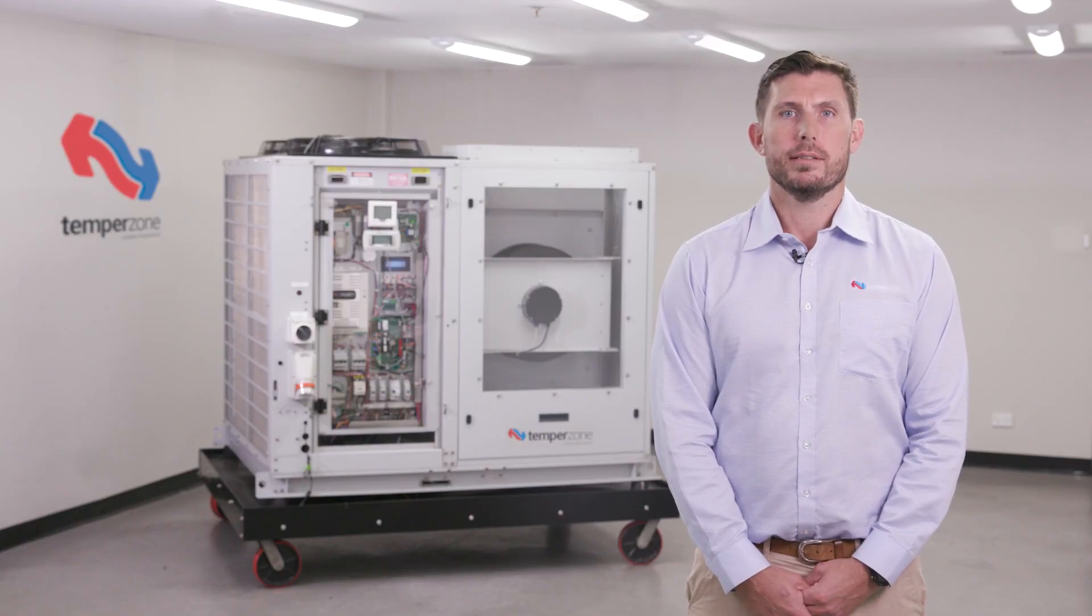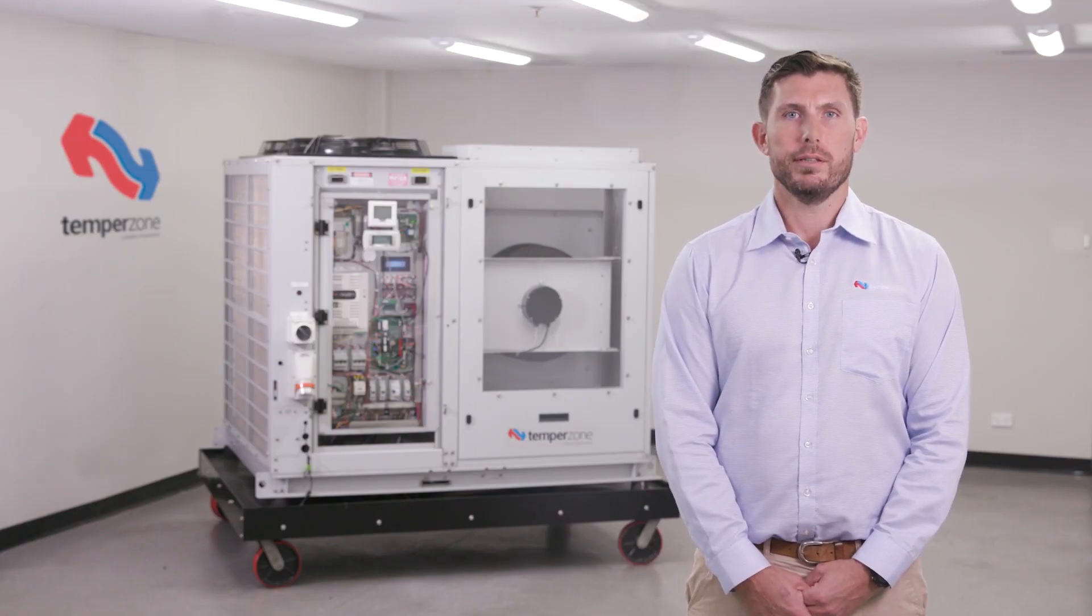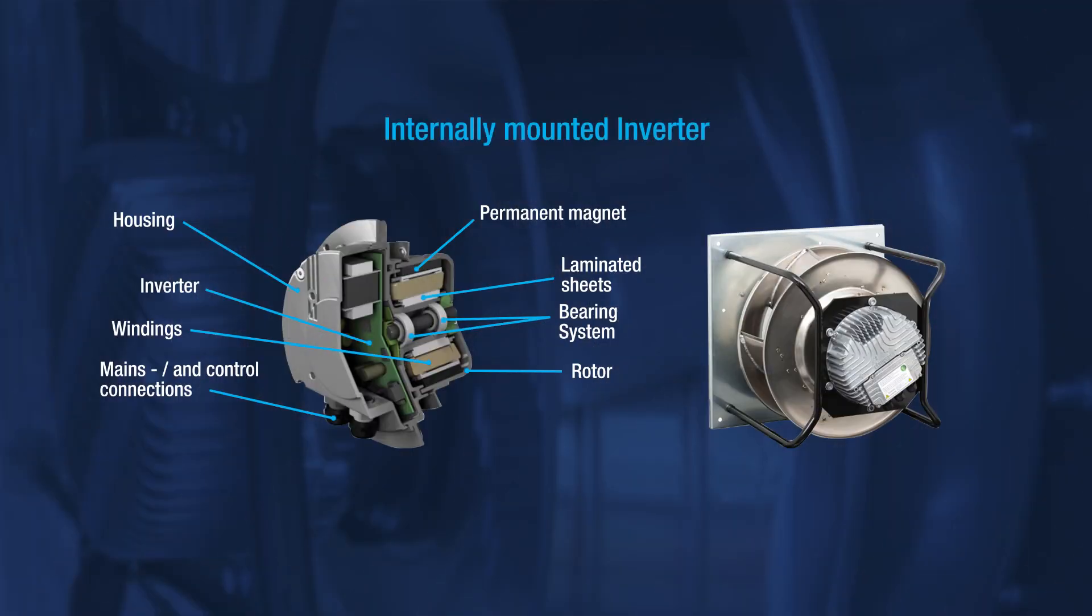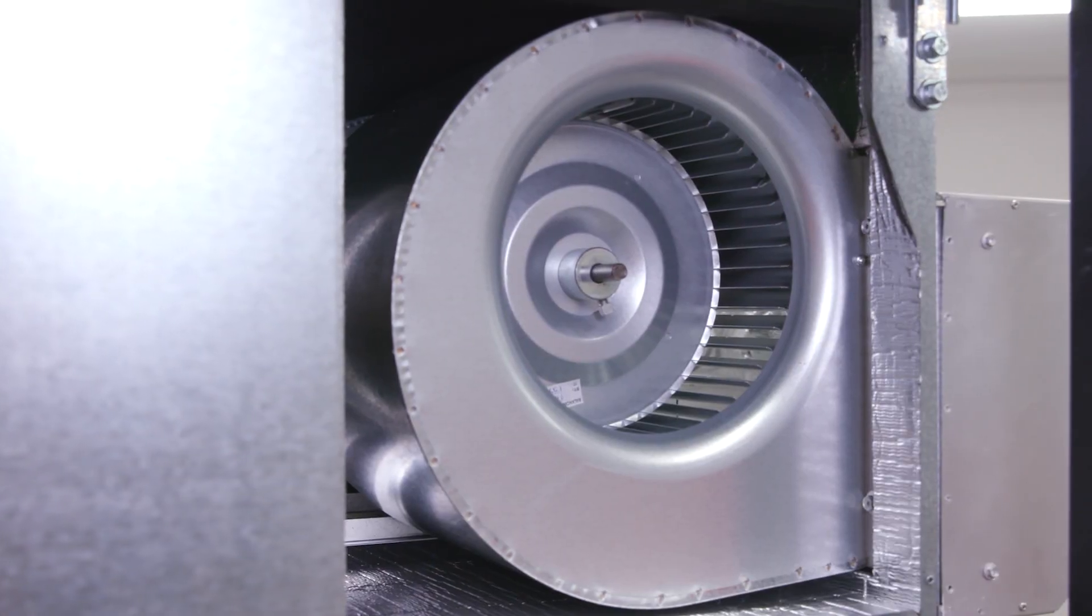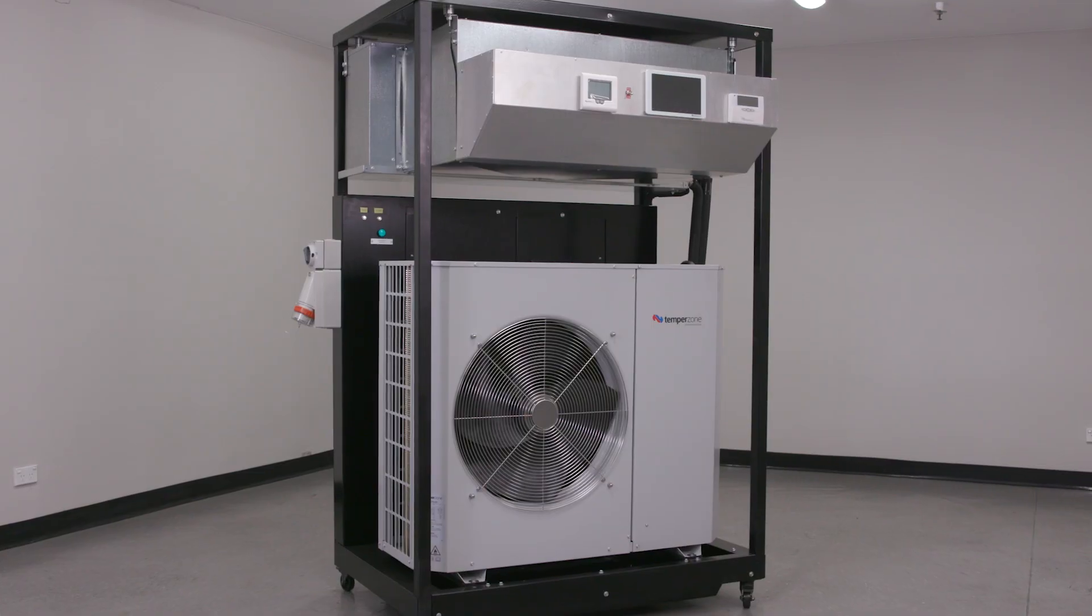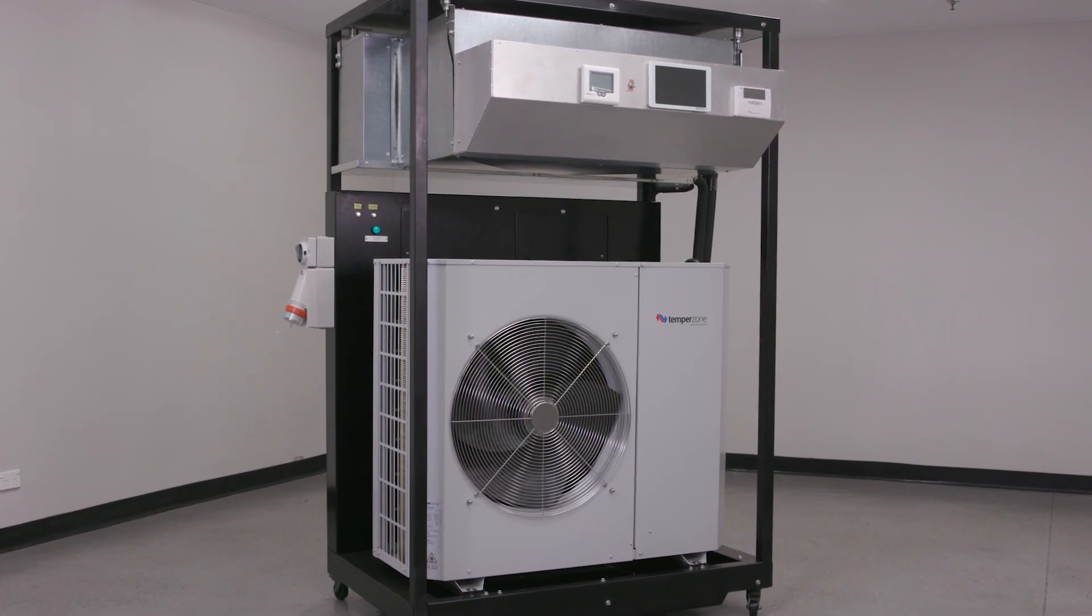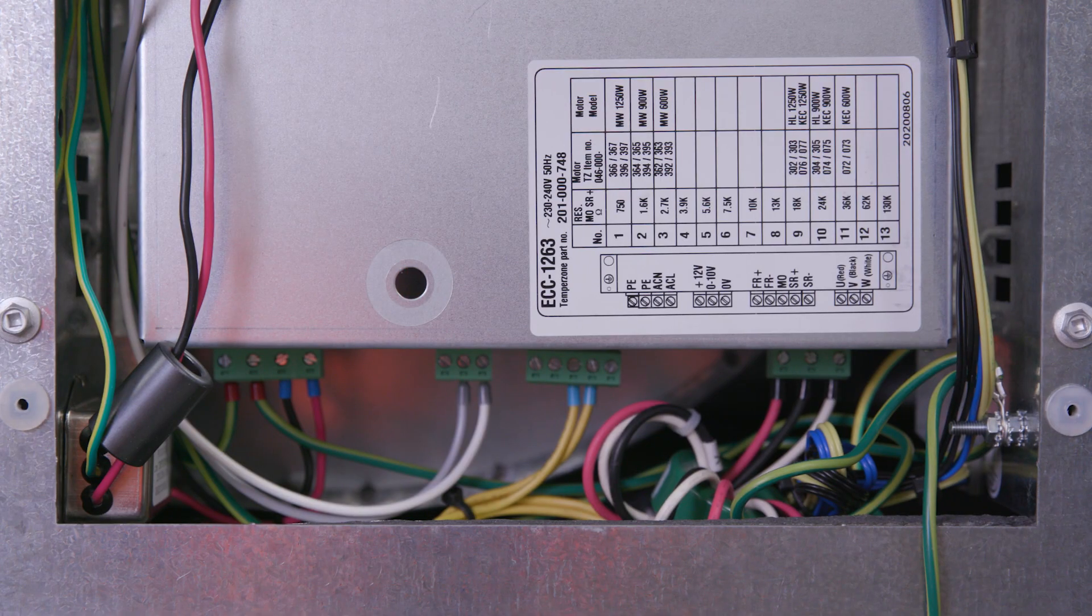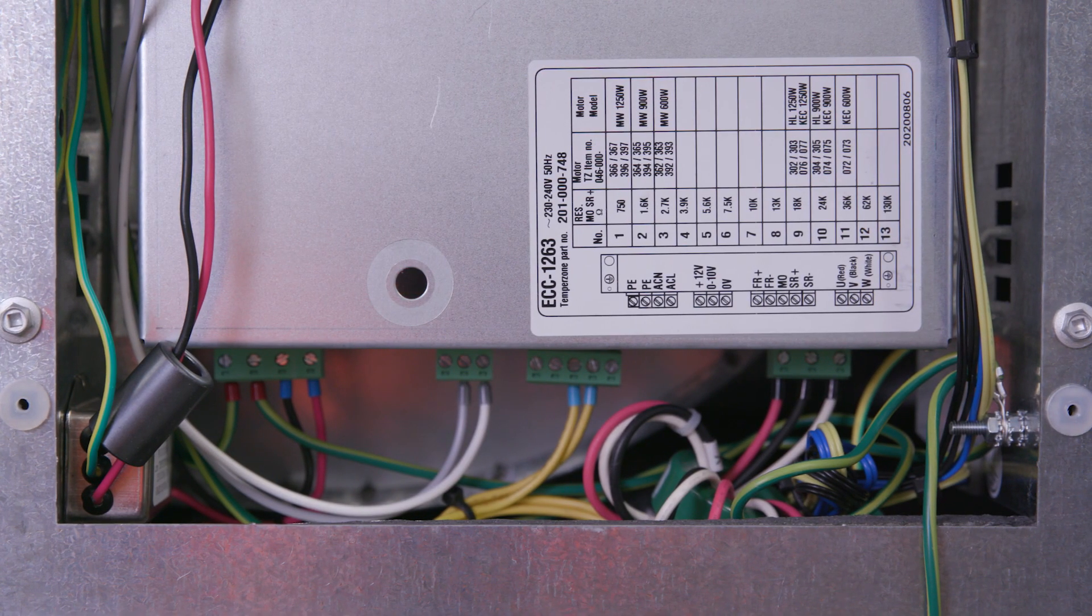TempoZone plug fans can be separated into two categories: internally contained inverter and external inverter. Internally mounted inverters are most commonly found in backward curve centrifugal evaporator fans and condenser propeller fans. Some forward curve centrifugal evaporator fans on small to mid capacity units use an external inverter called an ECC driver board to control the motor speed.